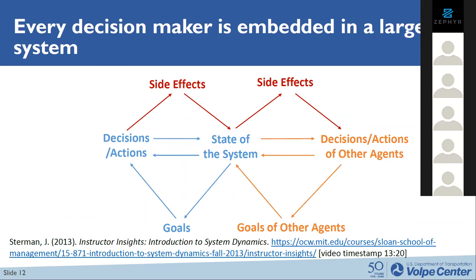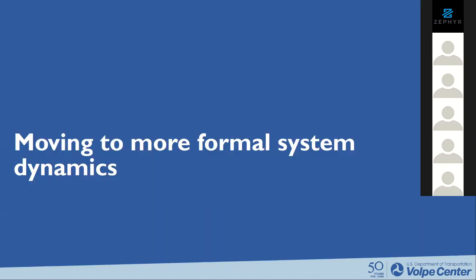As many of us here are travel demand modelers, one key motivation of developing models is to improve our understanding of how people make travel decisions. A system's perspective also focuses on the decision-making process of key entities. In addition, it motivates modelers to expand their mental models of a system by taking side effects of the decision-making process into consideration, and also considering other agents' behavior and related side effects generated from their decisions.